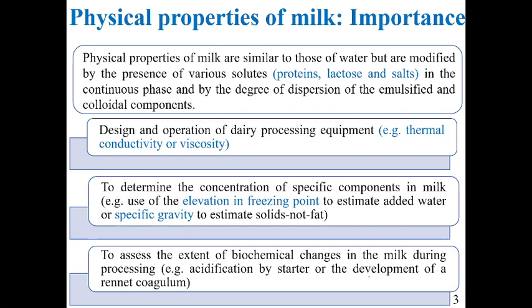Physical properties of milk are similar to those of water but are modified by the presence of various solutes like proteins, lactose, and salts in the continuous phase, and also by the degree of dispersion of the emulsified and colloidal components. The degree of dispersion refers to the size distribution of these components — their number, surface area, or mass volume.